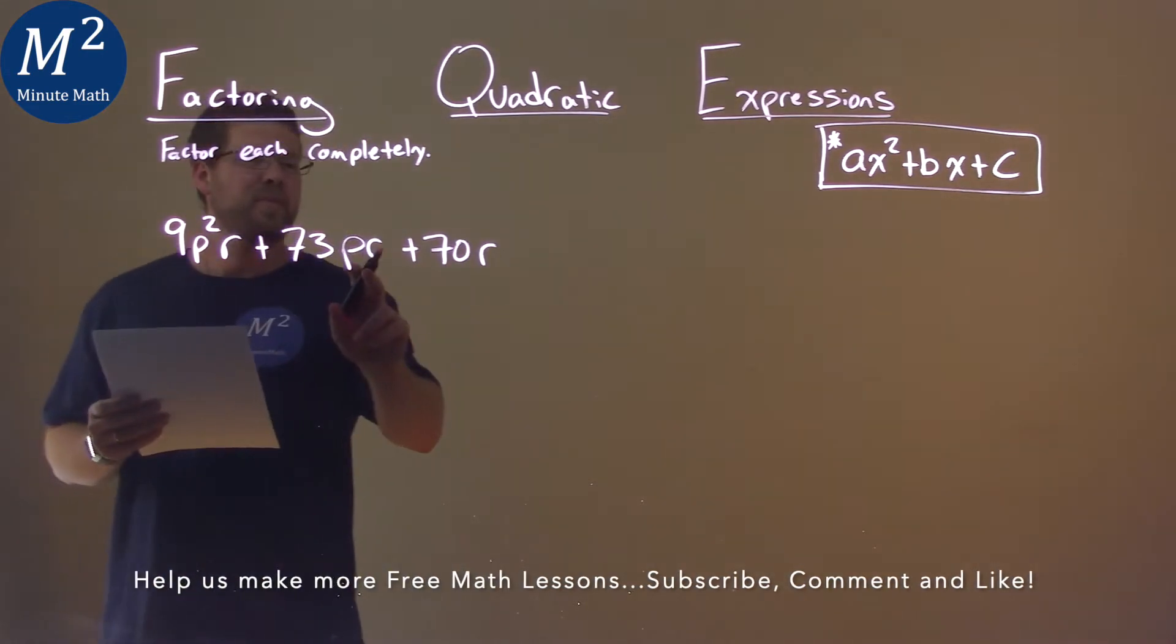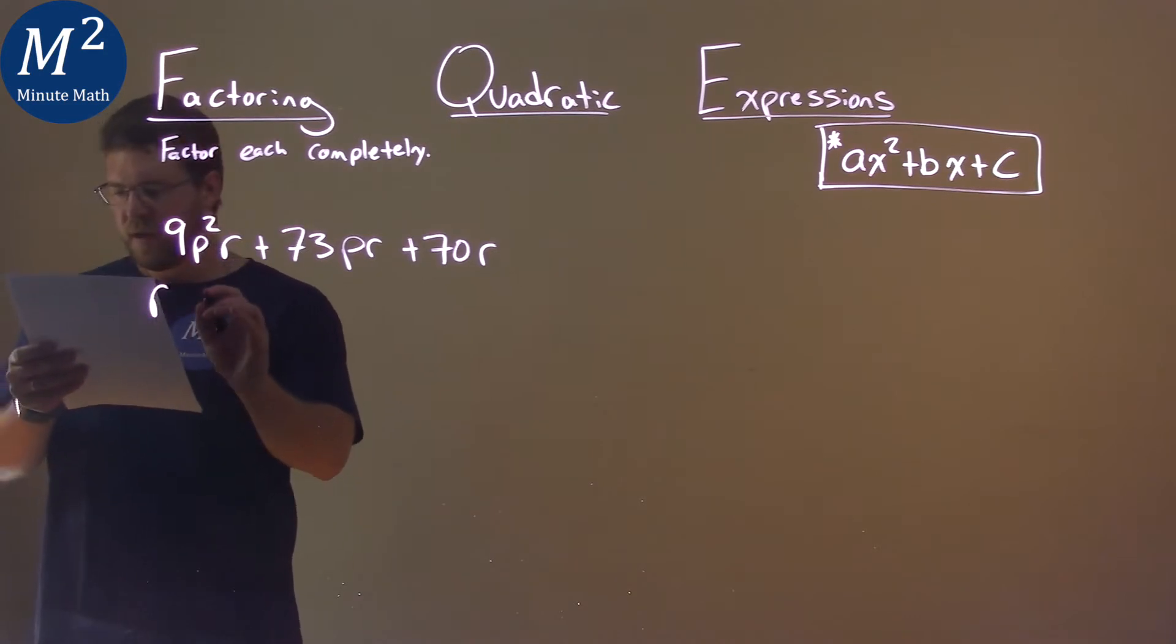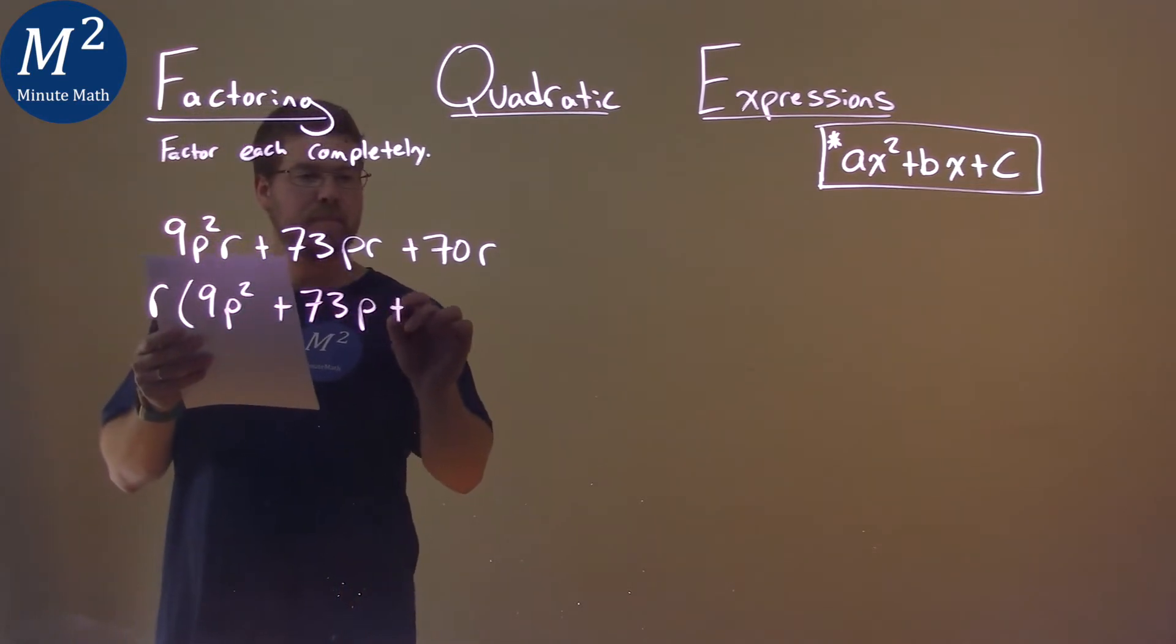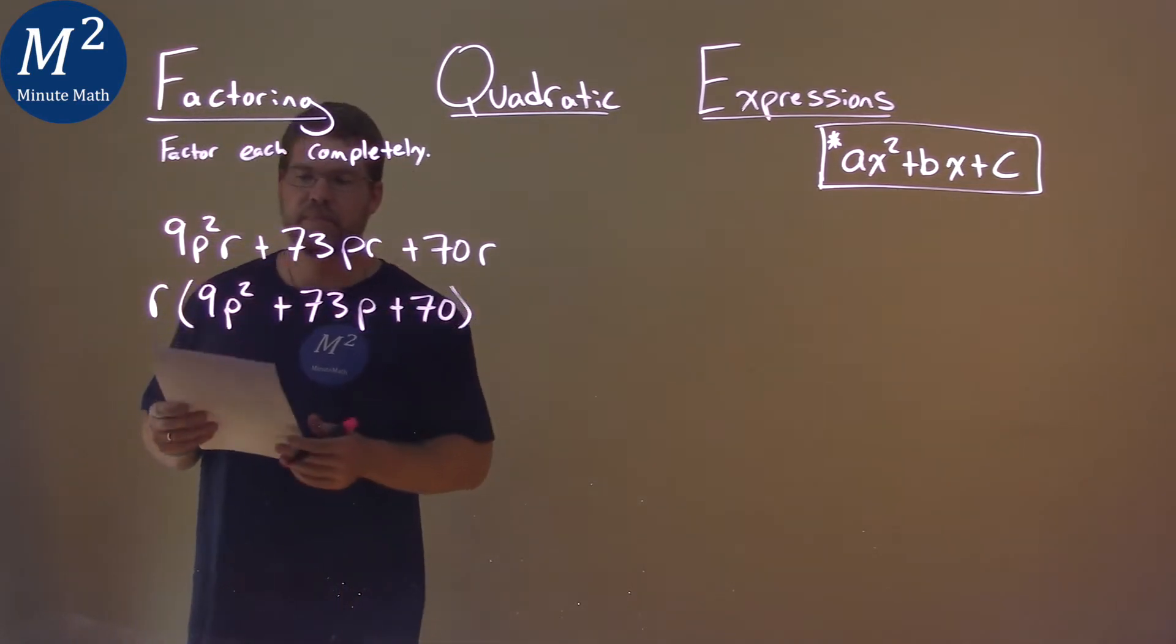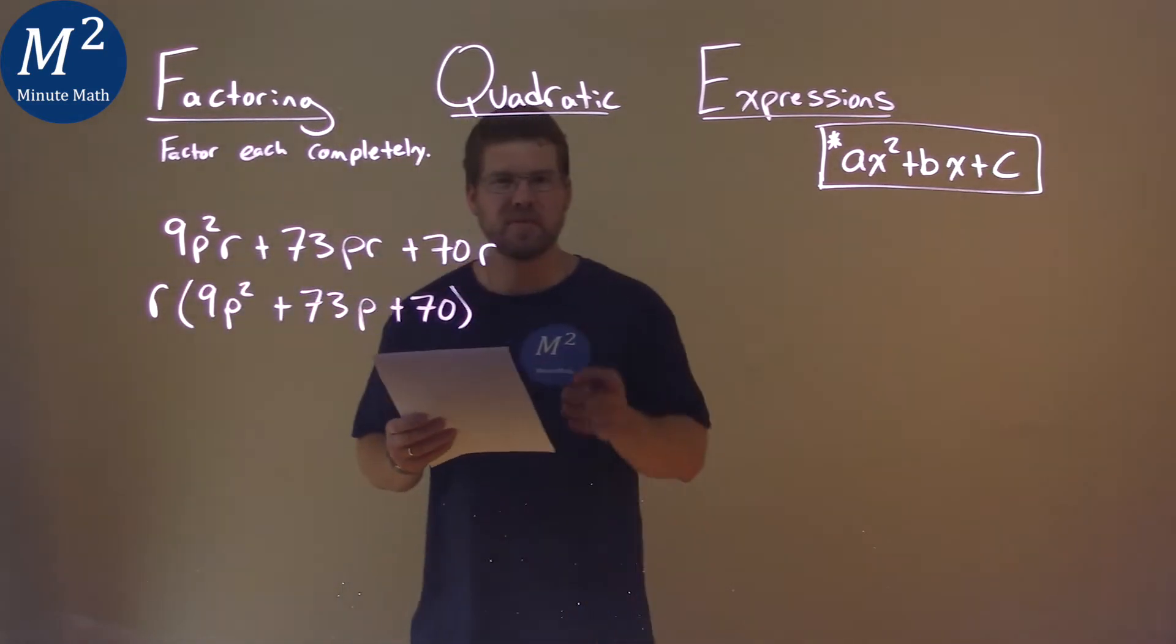One thing I notice is there's an r in all three terms. If we pull that out, we're left with 9p² + 73p + 70. Now we have a quadratic in the parentheses, so let's deal with that.